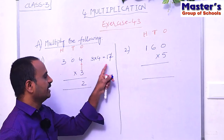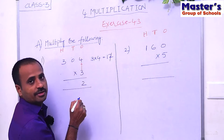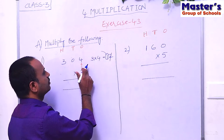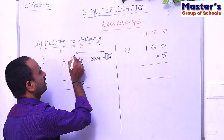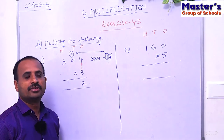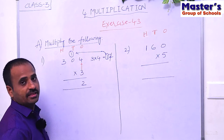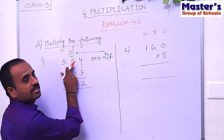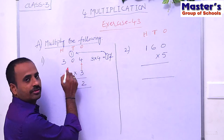Write the second digit under ones place and carry the first digit to the next place — the tens place. Carry 1 to the tens place. Now multiply the digit in the tens place with 3. The digit in tens place is 0, so multiply 0 with 3.